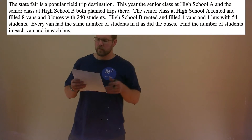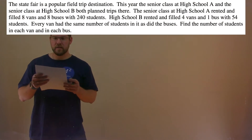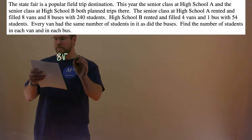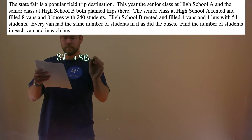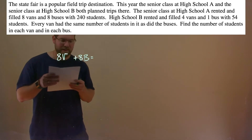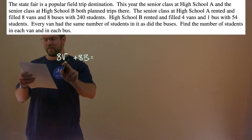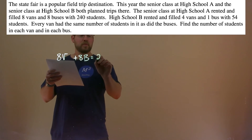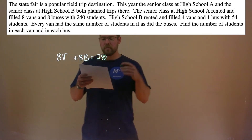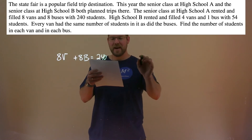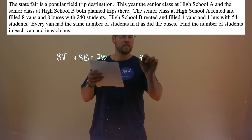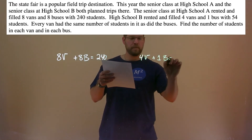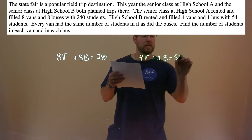So the first high school had eight vans and eight buses. So eight v, where v is the number of students in the vans, and eight b, where b is the number of students in the buses, gave a total of 240 students. School B had four vans — four v being the number of students in the van — plus one bus, and that had a total of 54 students, a lot less.